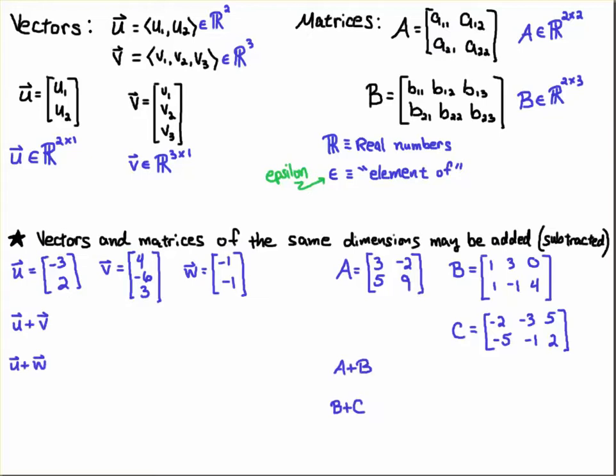If I want to add u plus v or add u plus w, I'll have to take their dimension into consideration. Likewise, I have three matrices A, B, C. A is in R^(2x2), B is in R^(2x3), and C is in R^(2x3). And if I want to add A plus B or B plus C, I'll have to take their dimensions into consideration.